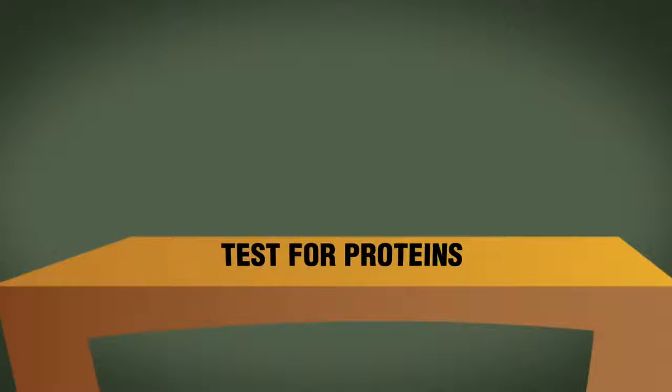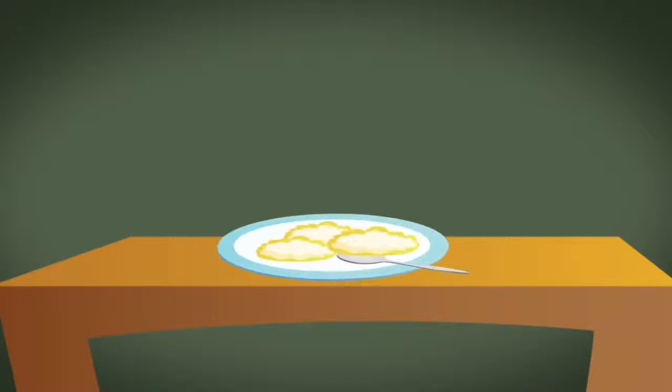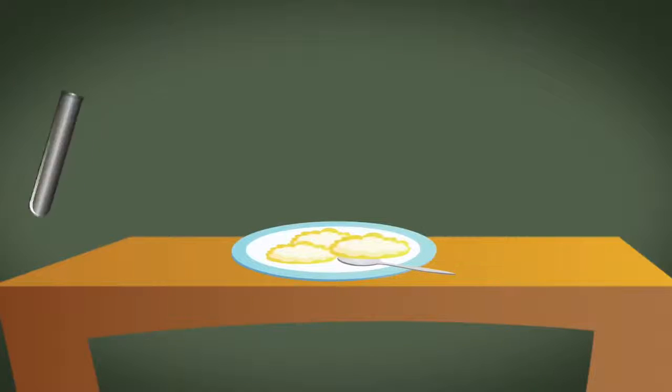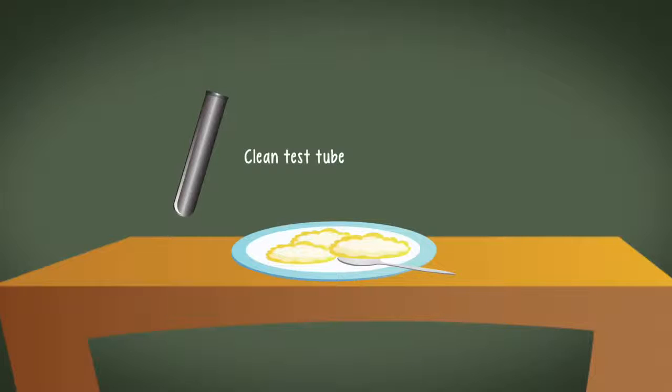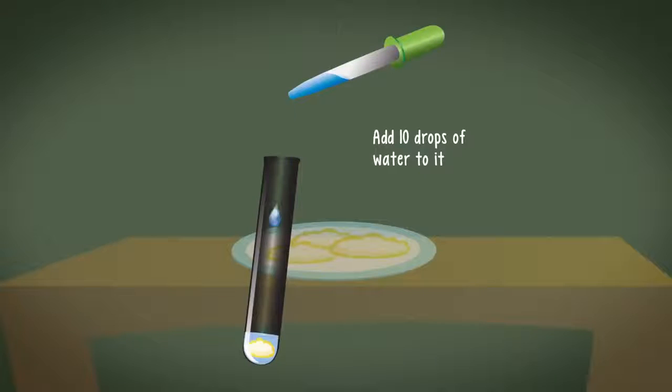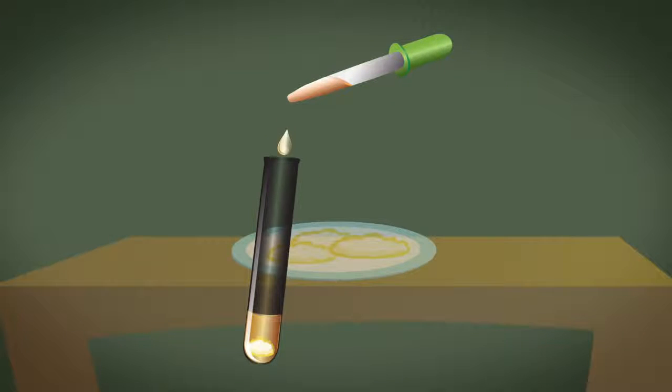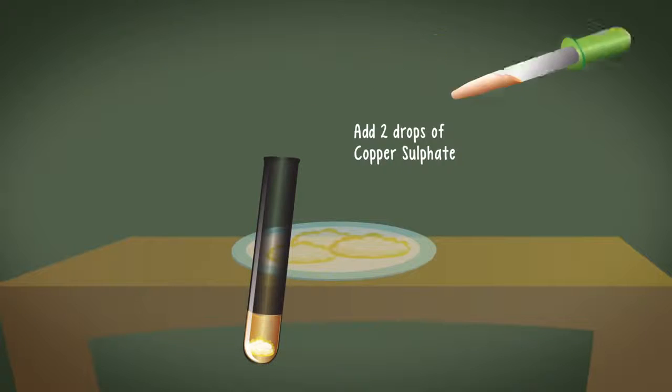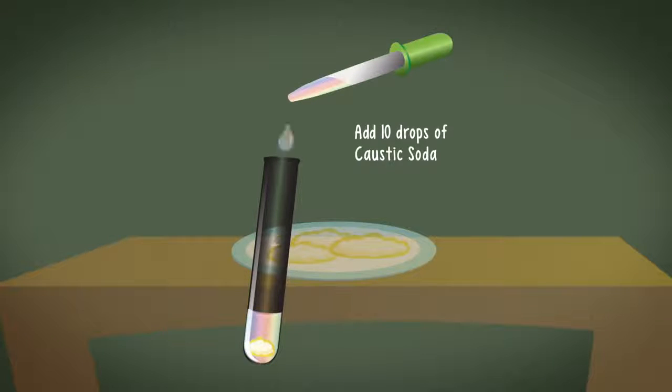Test for proteins. Take a small quantity of food item for testing. Grind or mash the food item. Put some of this in a clean test tube. Add 10 drops of water and shake the test tube. Now using a dropper, add 2 drops of copper sulfate solution and 10 drops of caustic soda to the test tube.